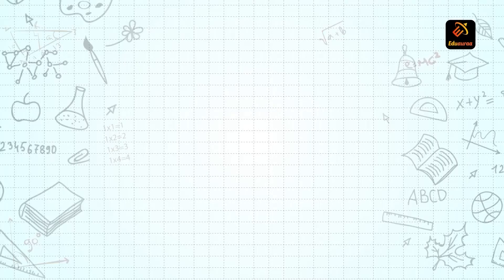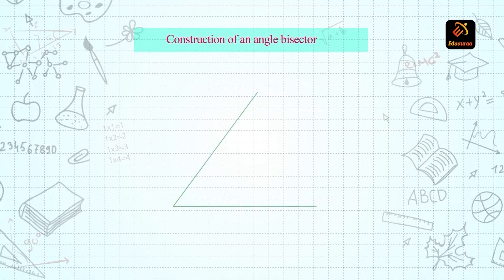So let us see how to draw the bisector of an angle. Steps of construction. Let angle ABC be the given angle which is to be divided or bisected.